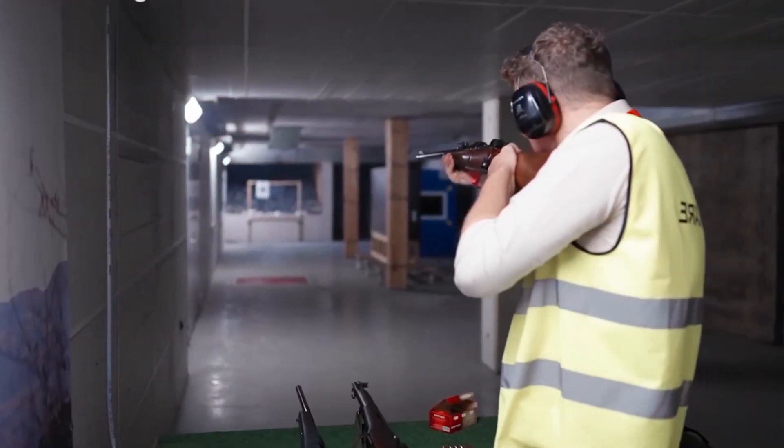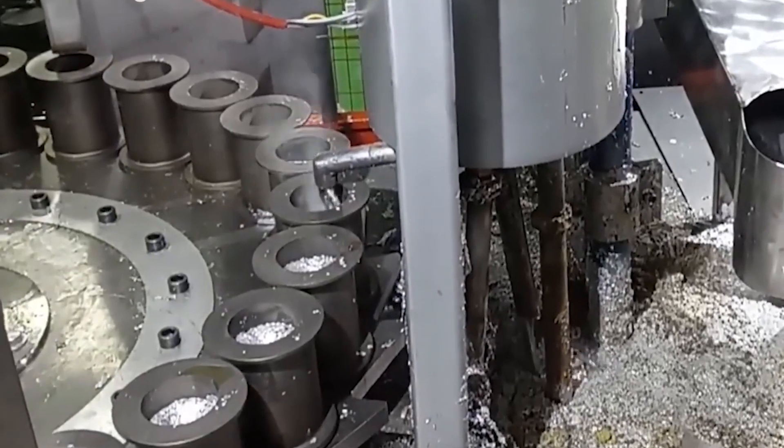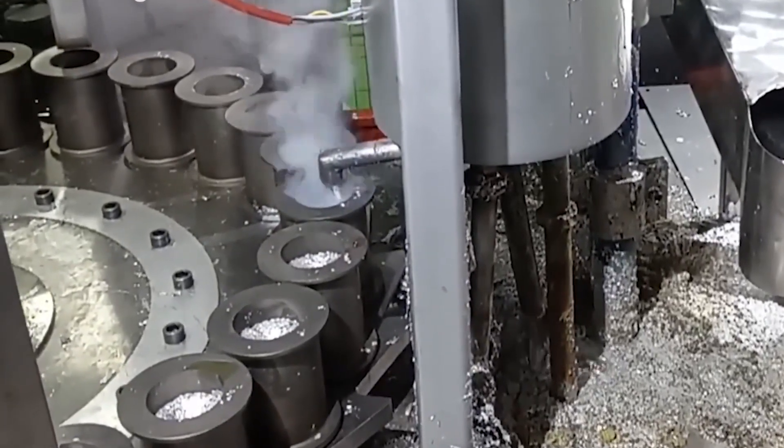The process begins with copper or brass cups that are cleaned and prepared to receive the priming compound. The explosive mixture, typically containing lead stiphonate, antimony sulfide, barium nitrate, and other chemicals, is carefully measured into each cup while still wet to reduce sensitivity.